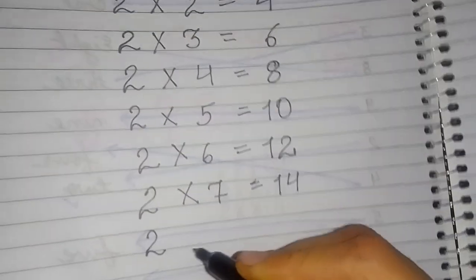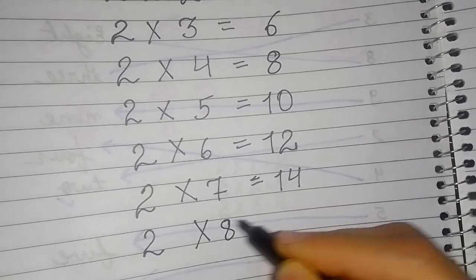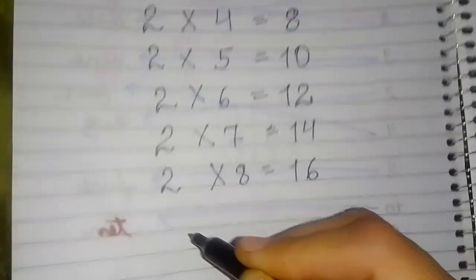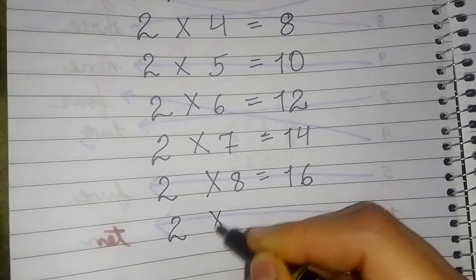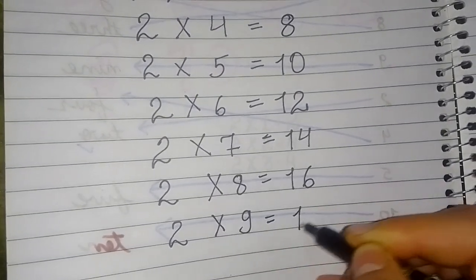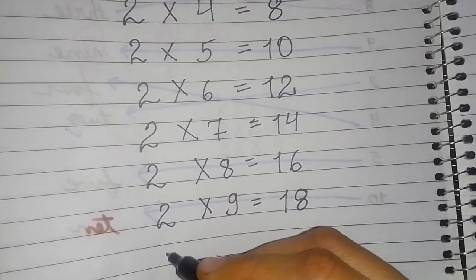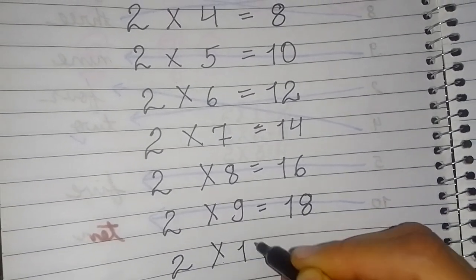2 eights are 16. 2 nines are 18. And 2 tens are 20.